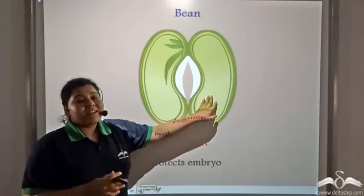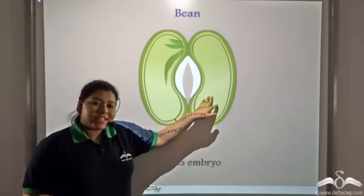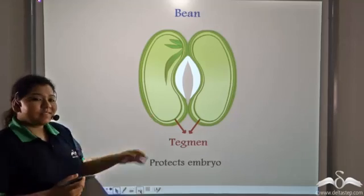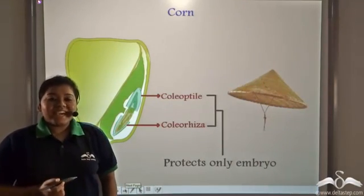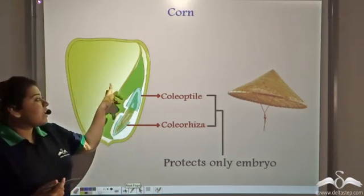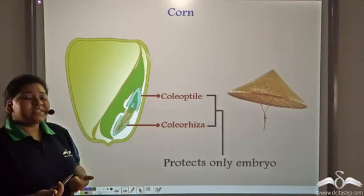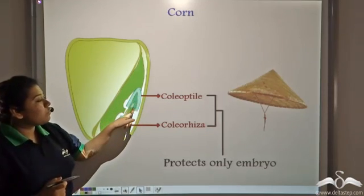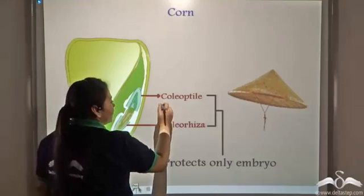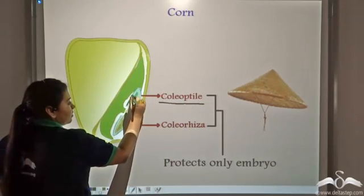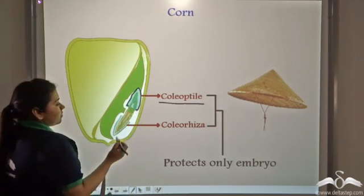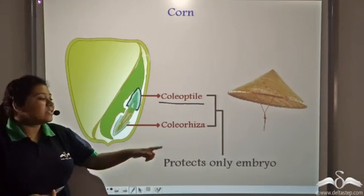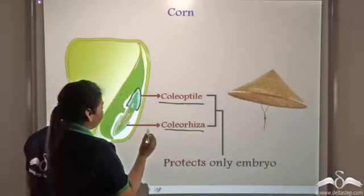This is a bean seed. Beans have an extra inner layer of protection known as the tegmin. The tegmin protects the embryo in the bean seed. In case of a corn, there is no extra protection for the endosperm but there is extra protection for the embryo. The structure that protects the shoot-forming part of the embryo is known as the coleoptile. And the structure that provides protection to the root-forming part of the embryo is also known as the coleoptile.